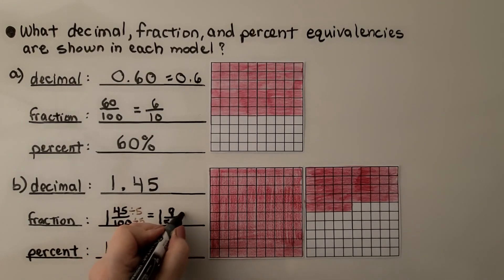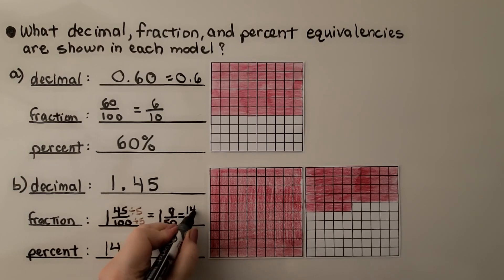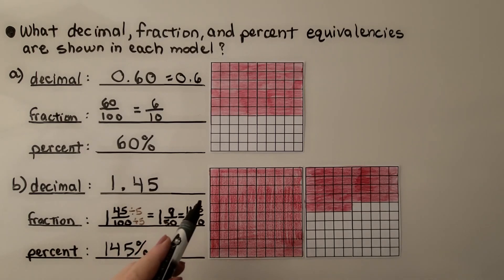So actually, this could also be 145 as the numerator and 100 as the denominator, couldn't it? If we made it a fraction greater than 1, this would be a mixed number. This would be the mixed number simplified. And this would be it as a fraction greater than 1. And as a percent, we have 145 percent.